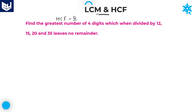Here, see the first question in this session: Find the greatest number of four digits which when divided by 12, 15, 20, and 35 leaves no remainder. That is the question given in the problem.